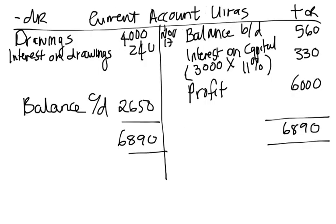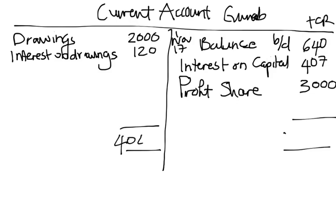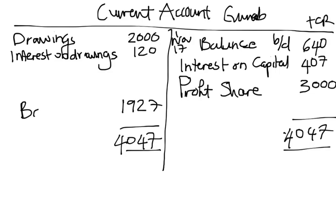The profit share for Gurirap from the appropriation account is $3,000, added to the credit side. The credit side total is $640 + $407 + $3,000 = $4,047. Deducting the debit items — $2,000 drawings and $120 interest on drawings — gives a closing balance carried down of $1,927 for Gurirap.